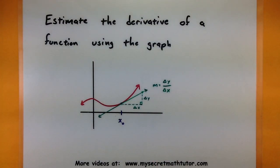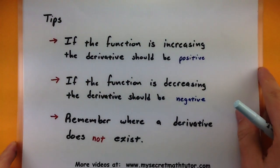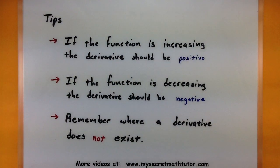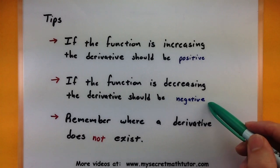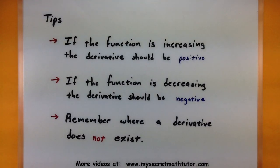Now here's some tips that you can use as we're going through and estimating these derivatives. If the function is increasing then the derivative should be positive at that point. And if the function is decreasing then the derivative should be negative at that point. So you know immediately this will tell you whether your answer is in the ballpark. You know whether it's positive or negative.